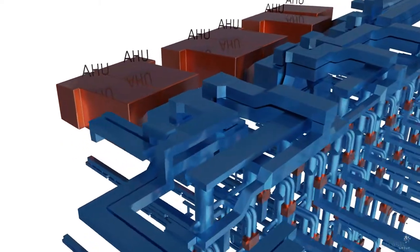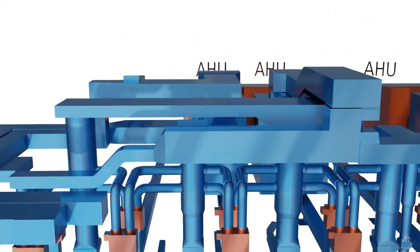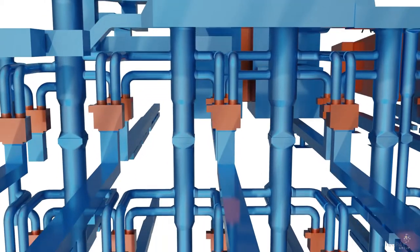Here we're following the vertical distribution from one air handler that supplies air to the laboratories on levels four, three, two, and one.